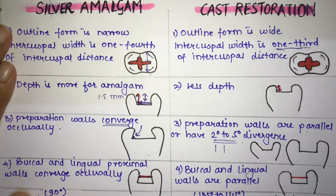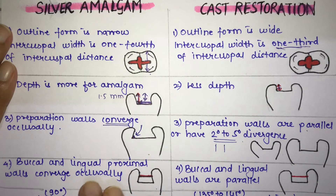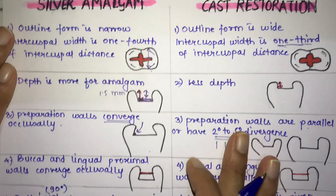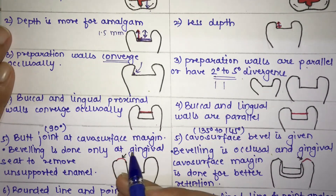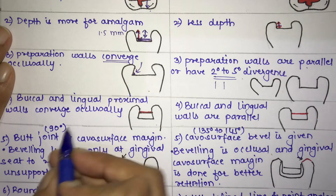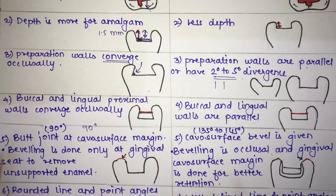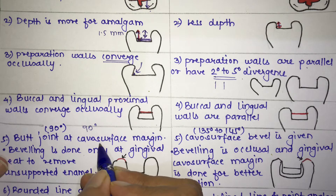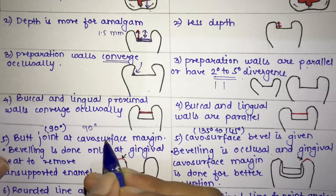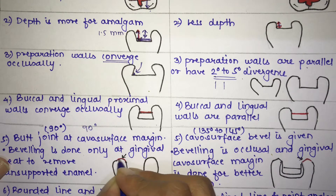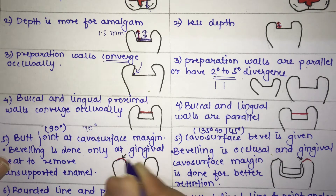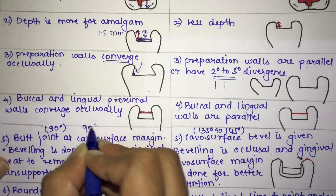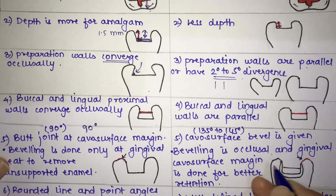The next difference is that in amalgam, the buccal and lingual proximal walls converge, whereas in cast restoration they are parallel. Also, the cavity surface margin — the angle between the prepared surface and the external surface — is 90 degrees (a butt joint) in amalgam.